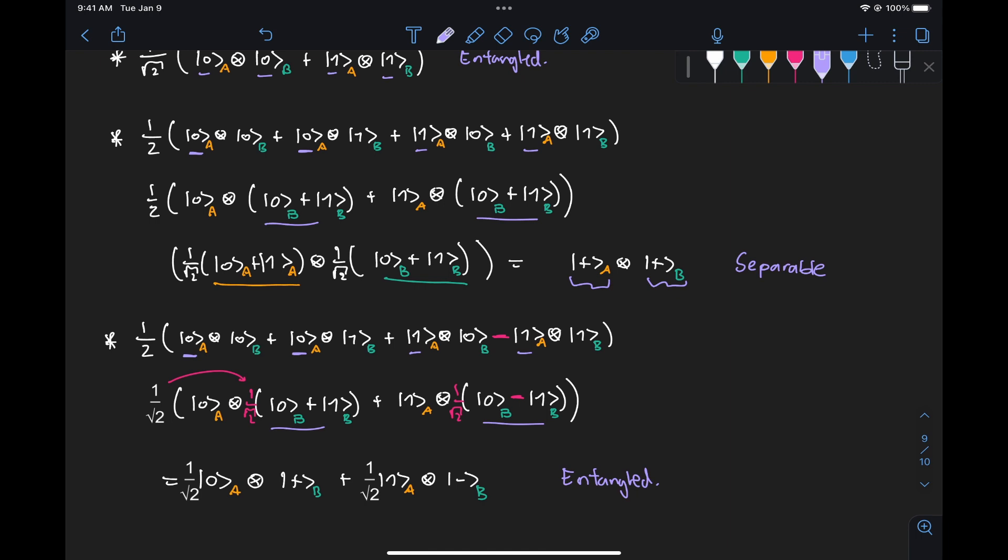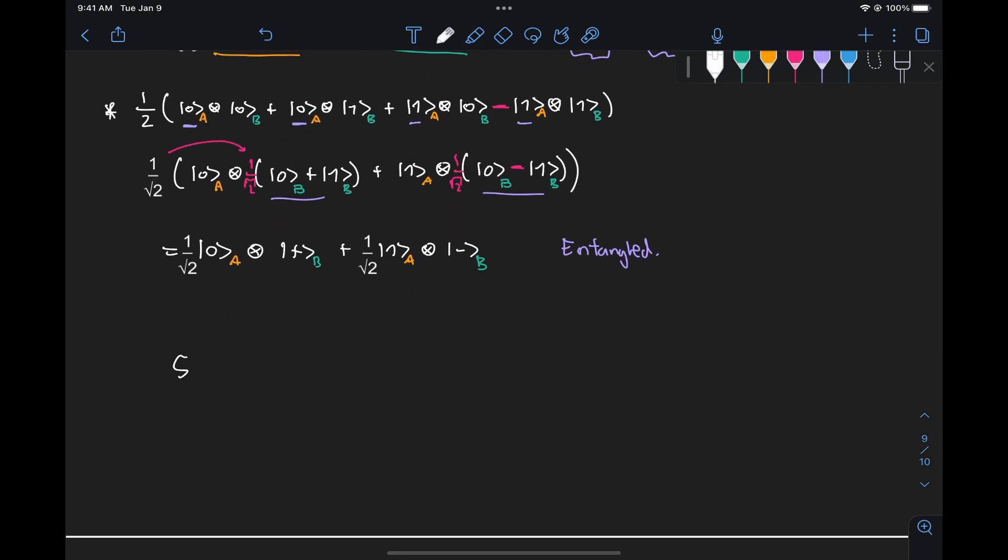Now, before going into the details of measures of entanglement, we do need to discuss a very important concept known as the Schmidt decomposition. Now the Schmidt decomposition is a technique to factorize our states in a way where we can clearly determine if a state is entangled or separable. And then we can take some of the components of that representation to build the measures of entanglement that we're going to discuss.